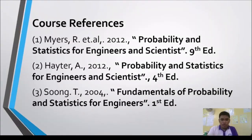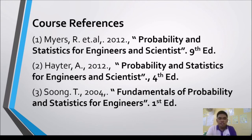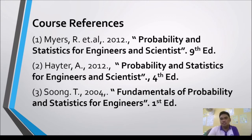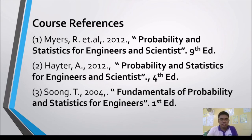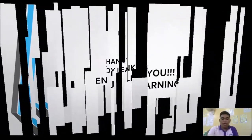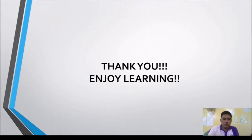For books and references, there is no prescribed textbook, but we have three references: first, Probability and Statistics for Engineers and Scientists, 9th edition by Myers; second, Probability and Statistics for Engineers and Scientists, 4th edition by Hayter; and third, Fundamentals of Probability and Statistics for Engineers, 1st edition by Sue Ong T. That covers our subject orientation — thank you for your time and enjoy learning.